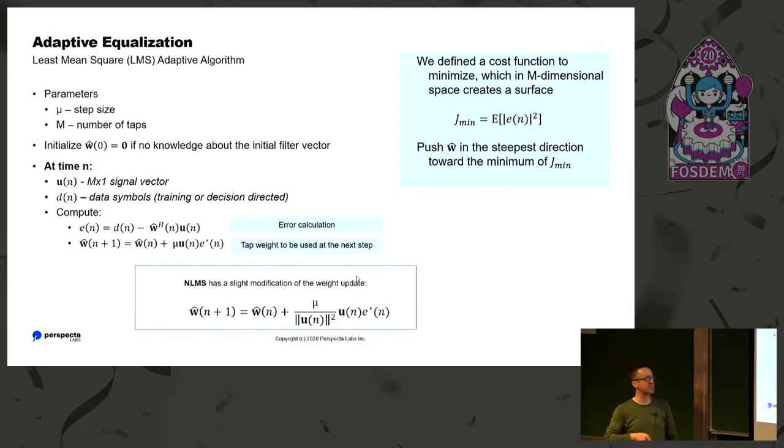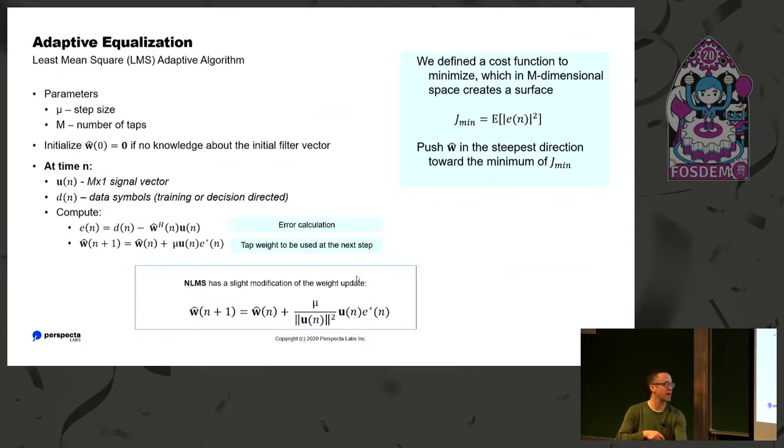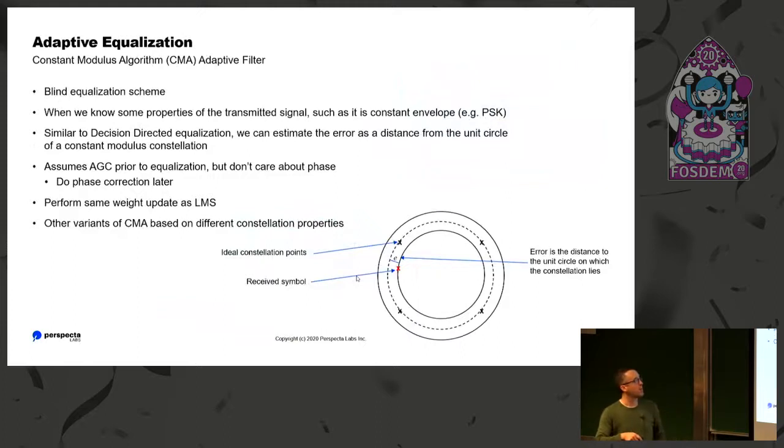So CMA, mentioned briefly, it's the same weight update as LMS. We're going to push in the way, away from how we calculated our error. But what we're going to do is we're going to calculate our error differently. Assume we're receiving like a QPSK signal, APSK, any kind of constant modulus signal. What we want to do is calculate the error, how far from that circle we expect our symbols to be. So that's all CMA is. So we don't have to be phase aligned at this point. We just have to be AGC'd. We have to, this has to be a known unit circle.